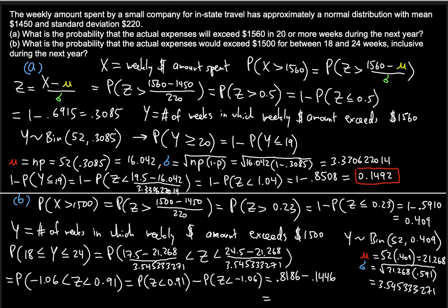The answer is 0.674. This is the probability that the actual expenses would exceed $1500 for between 18 and 24 weeks inclusive during the next year — the answer to Part B. Thank you for watching. Hope this was helpful. See you in the next video.